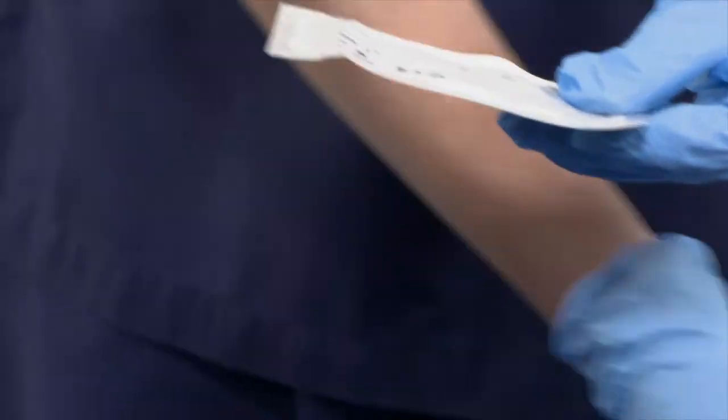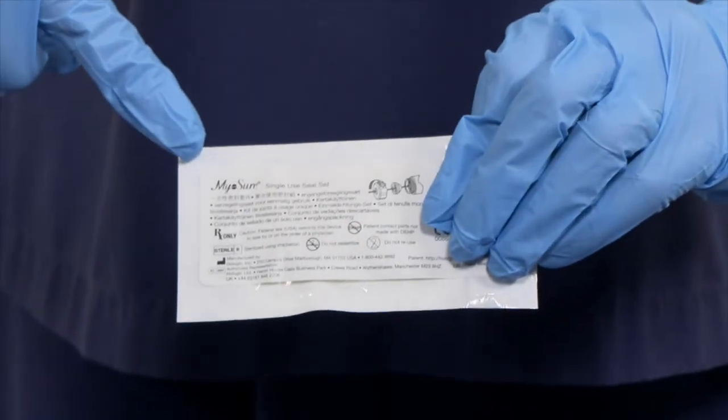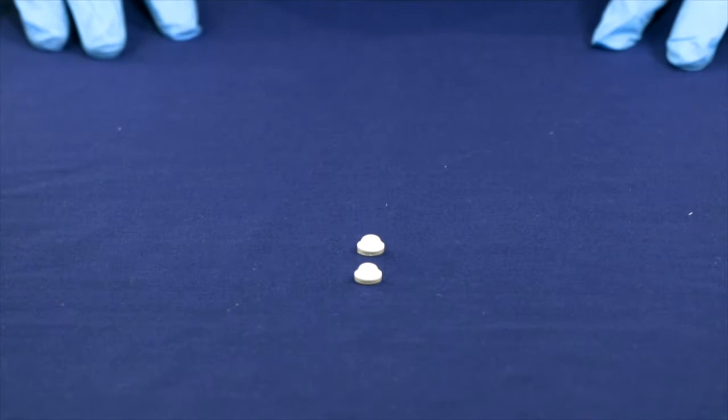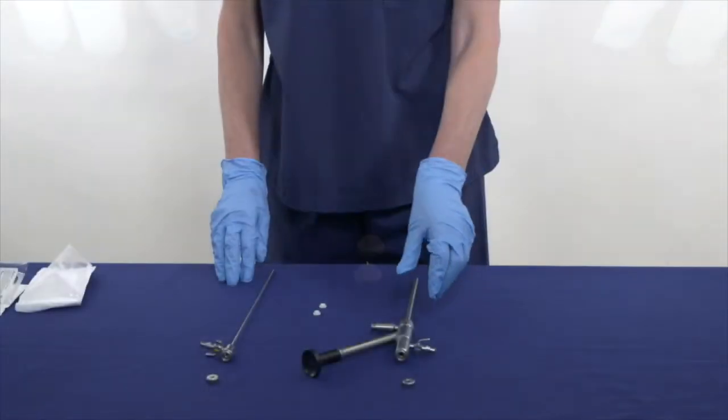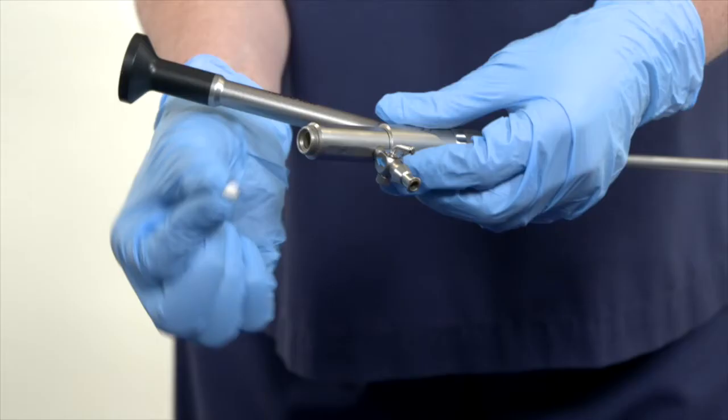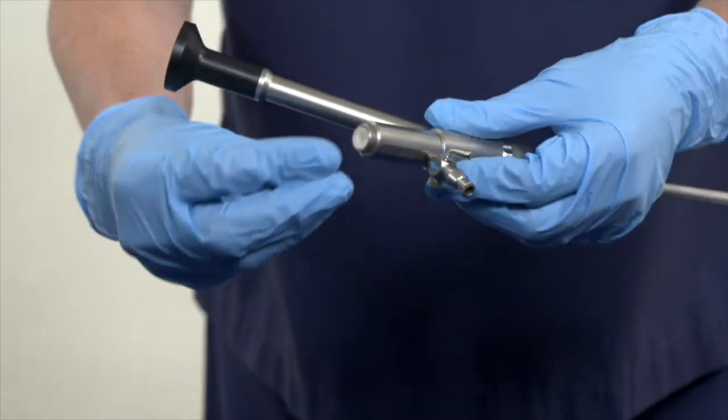Open the single use Scope Seal packet carefully on the side which says Myershaw and this will reveal two dome-shaped seals. Take one seal and insert it into the end of the scope, ensuring the dome shape is facing down, and screw on the end cap.